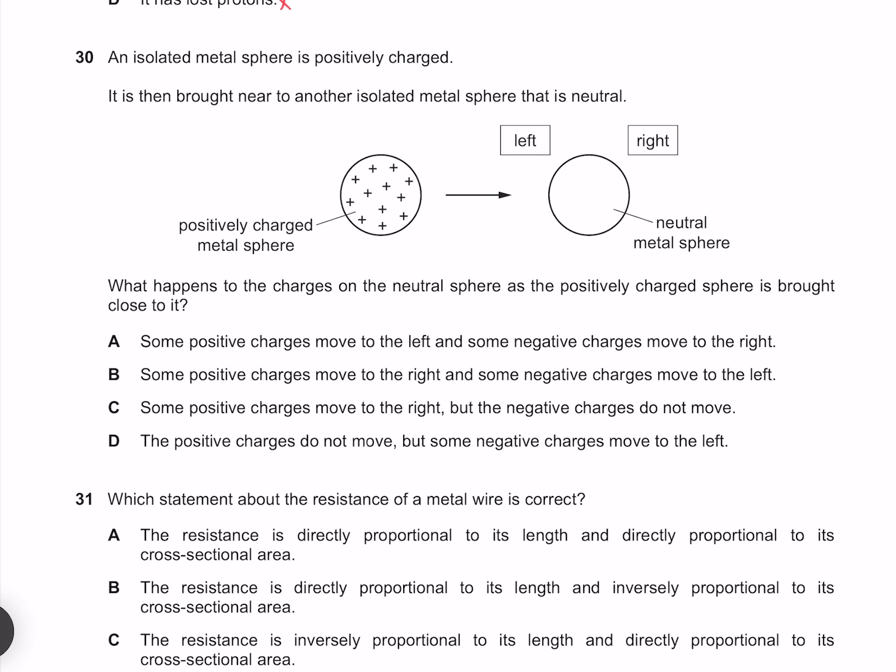An isolated metal sphere is positively charged. It is then brought near to another isolated metal sphere that is neutral. What happens to the charges on the neutral sphere as the positively charged sphere is brought close to it? As our positive charges are brought close, our negative electrons are going to be attracted to the left. Our positive charges or our positive protons are however not going to move. Our answer must therefore be D.